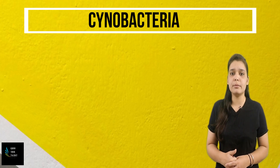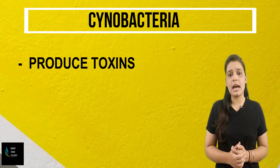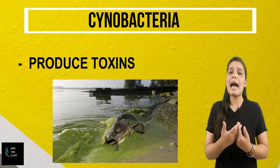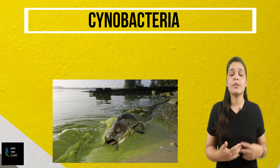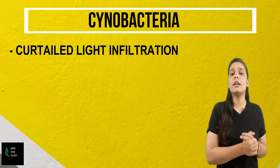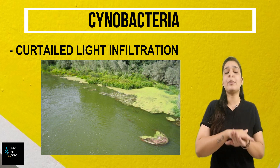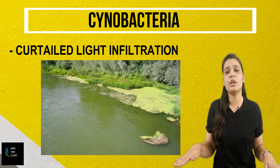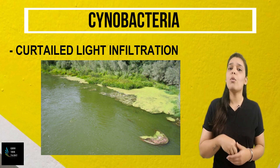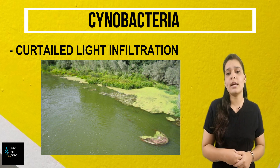If we talk about the problems associated with blue-green algae or cyanobacteria, the first problem is that they produce toxins that are harmful for aquatic life and for human life also. The second concern is curtailed light infiltration — blue-green algae found on the water body surface means very low sunlight can penetrate inside the water, which is very harmful for aquatic life.